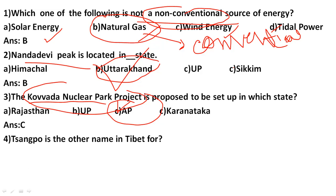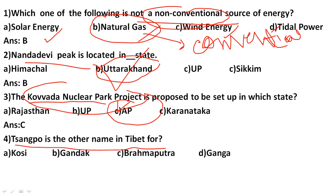Shangpo is the another name in Tibet for which river? Shangpo is the Tibetan name for the Brahmaputra. The great river Brahmaputra is called Shangpo in Tibet.